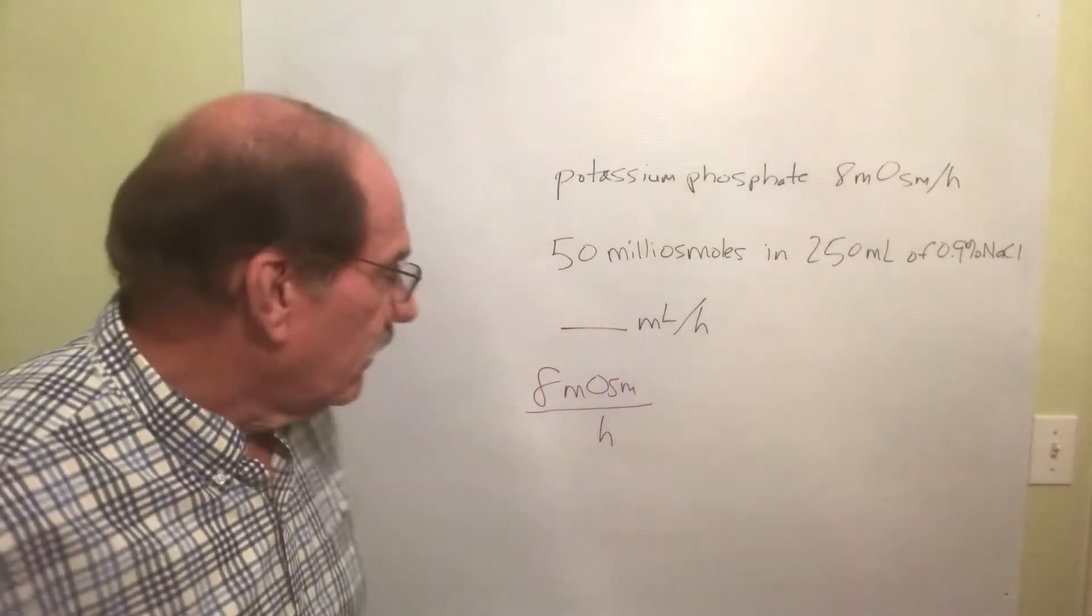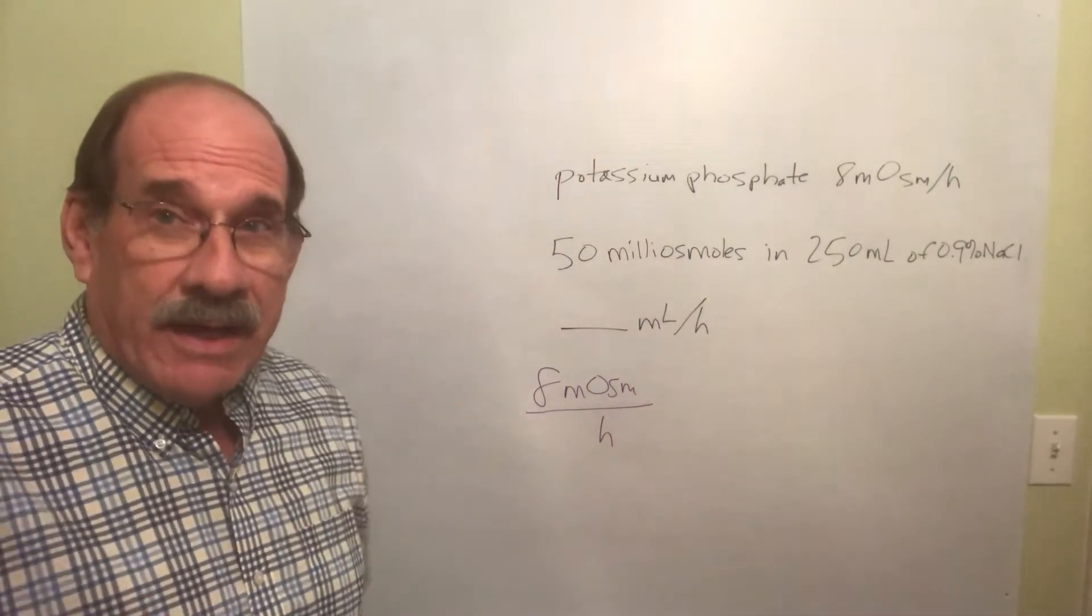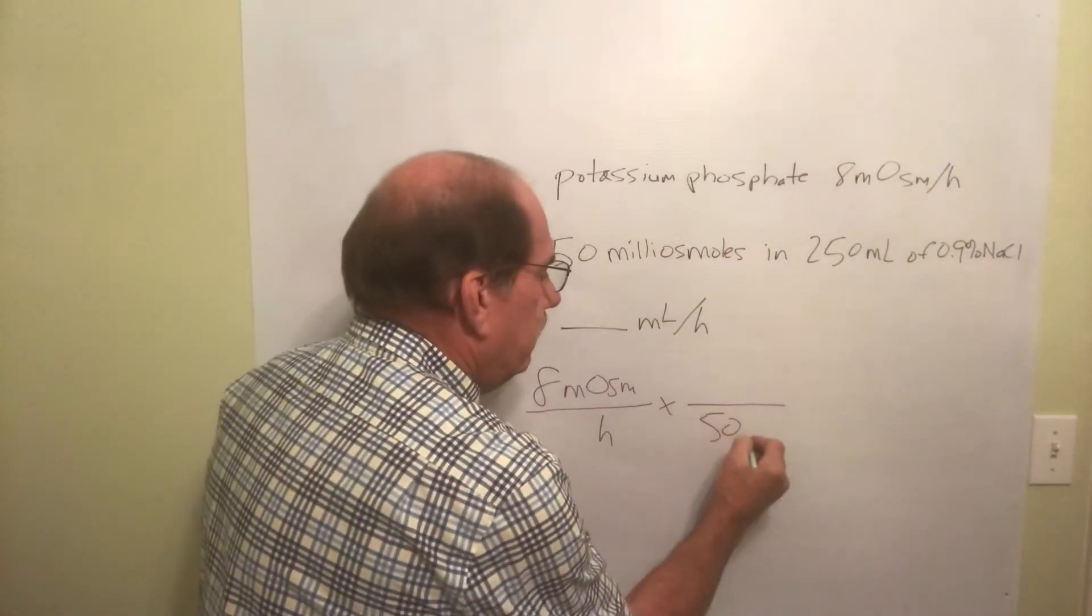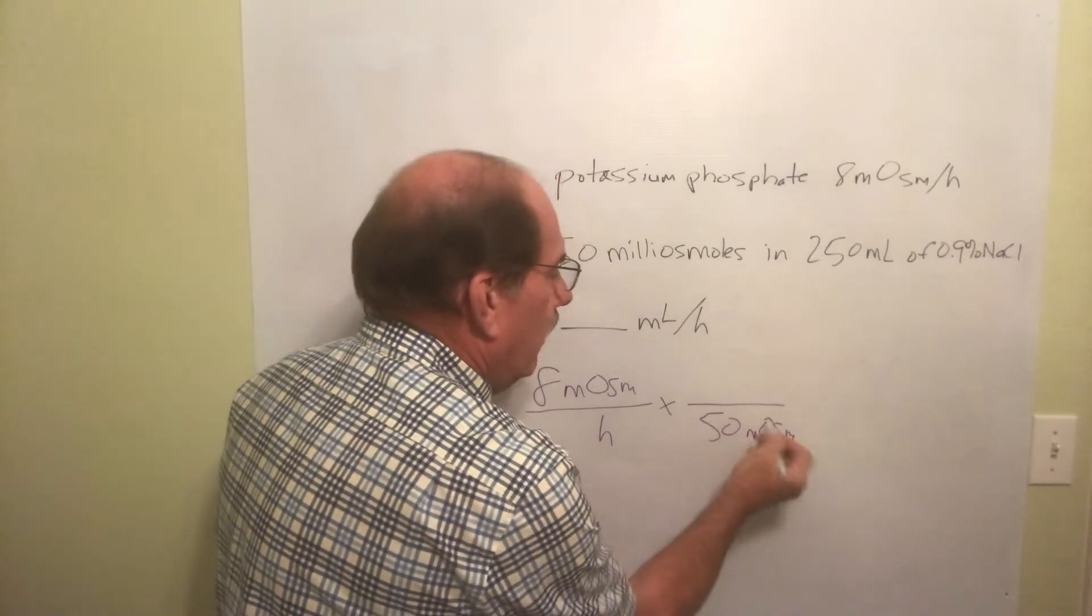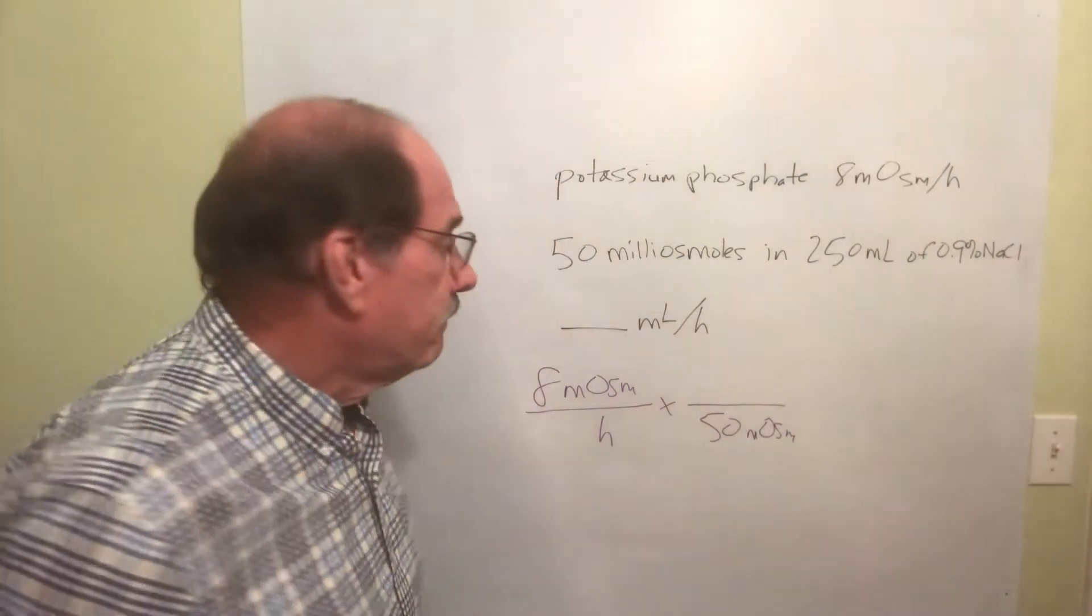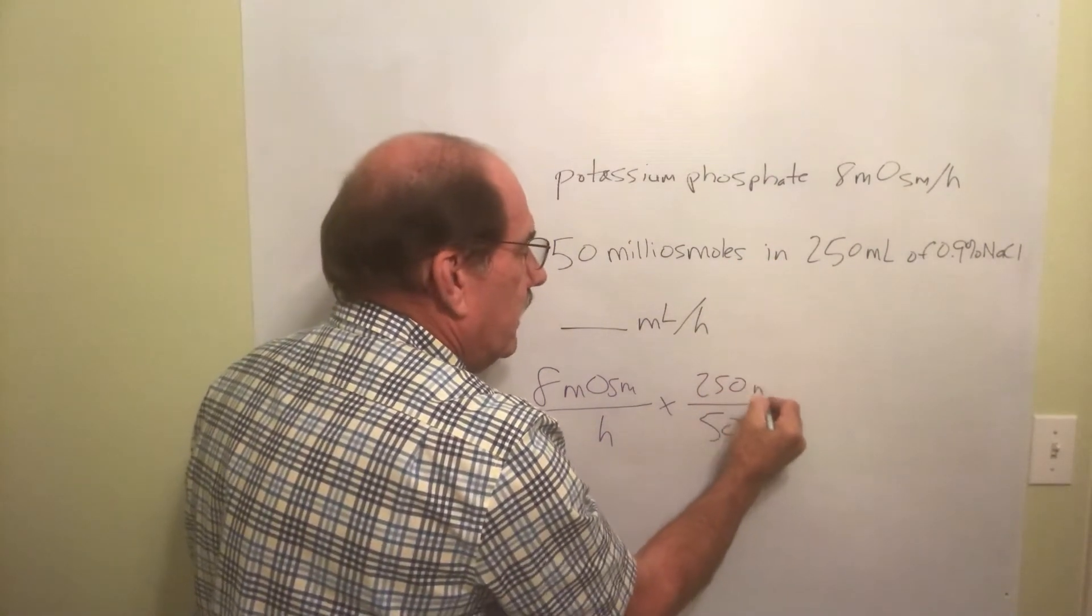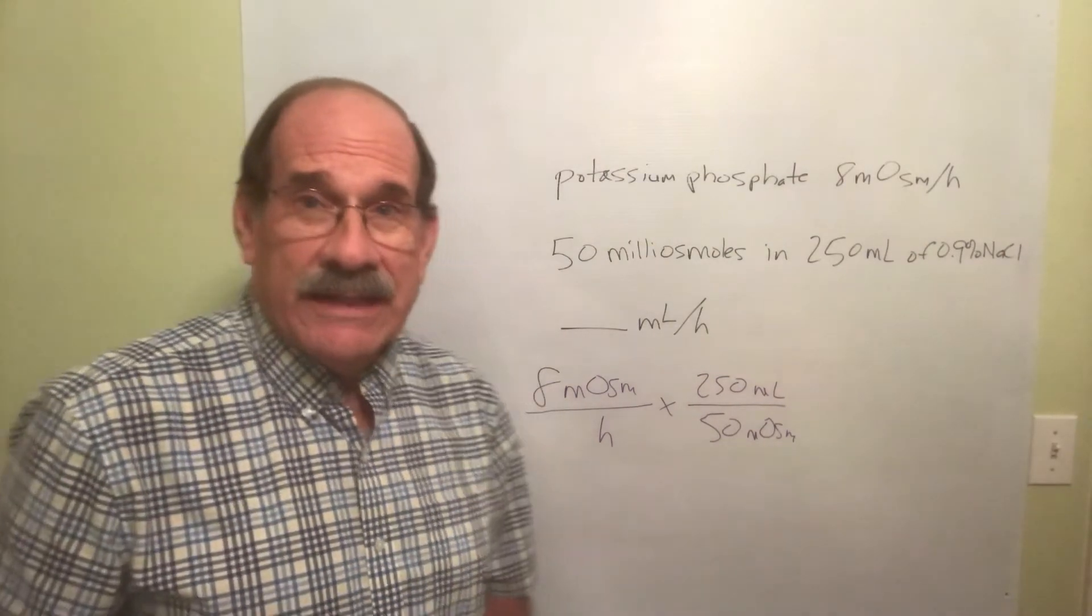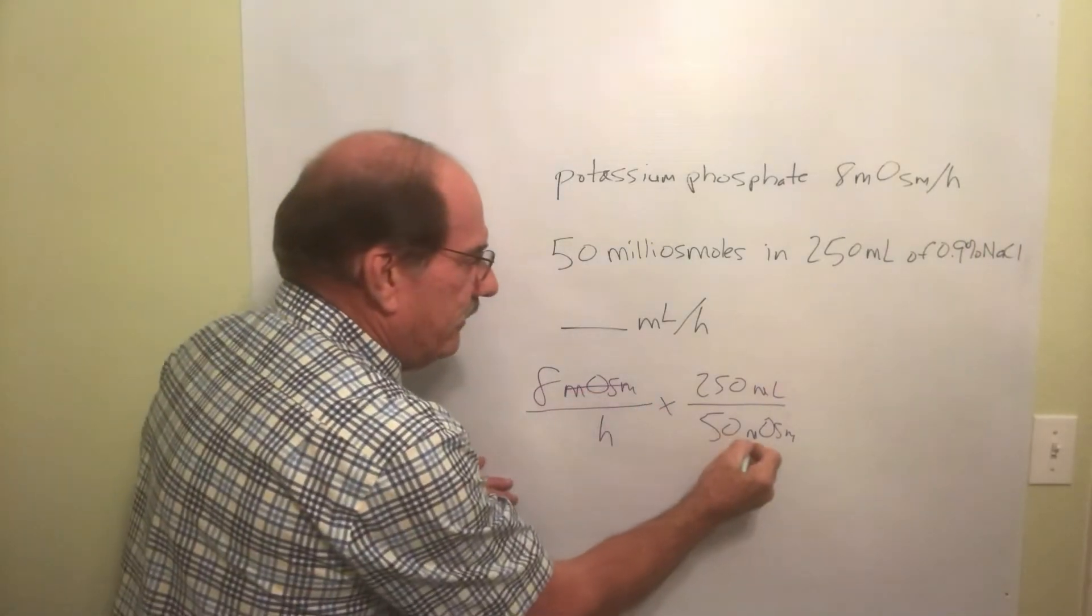I have an order for eight milliosmoles per hour. You write it that way, so there's the order. I need to know now, how strong is my IV fluid? Well, I've got it right here. I've got 50 milliosmoles - that's a capital O, by the way, the other one's a little bitty - in 250 milliliters. It's just like a plain old dosage calculation problem.